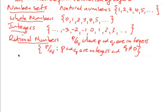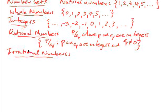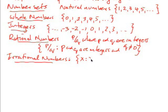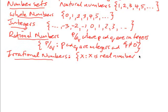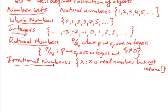Then we have what's called irrational numbers. We can't be rational and irrational at the same time, so these sort of exclude each other — irrational numbers are numbers that are not rational numbers. So it's the set of numbers X such that X is a real number but not rational. They can't be written as a fraction.